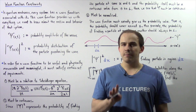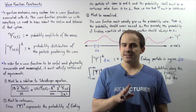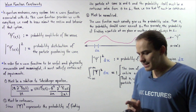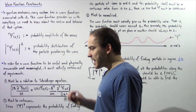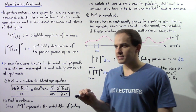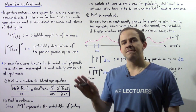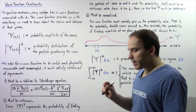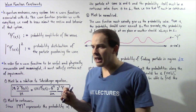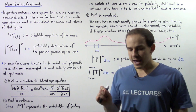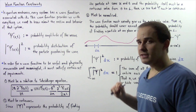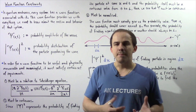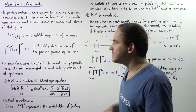In this lecture, we're going to examine some of the constraints that exist when we're dealing with wave functions in quantum mechanics. Every single system, for example an electron, has its own wave function associated with it. The wave function is obtained by solving Schrödinger's equation and basically provides us with all the information we need to know about the motion and behavior of that system.